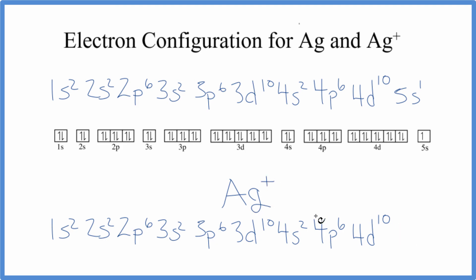So this goes away here. This becomes positive, and this is the electron configuration for Ag+. We just lost this one 5s¹ electron.